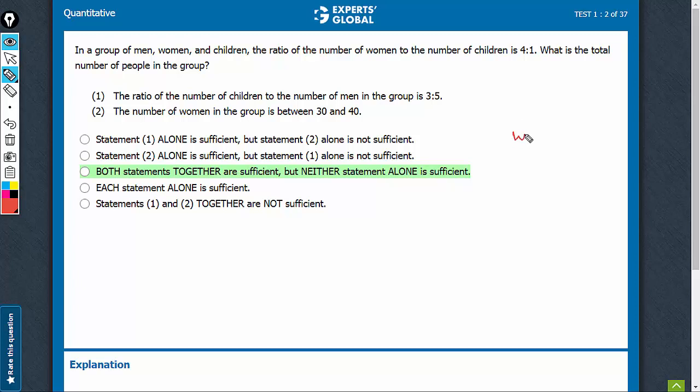Women is to children is 4 is to 1, is what's given in the question. We have to find the total number of people in the group.